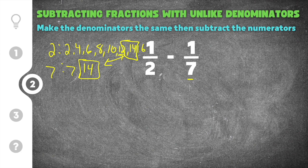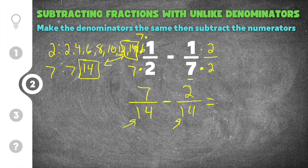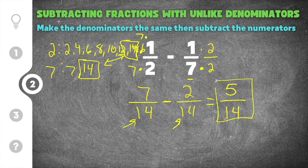We need to change both denominators into 14. For 1 half, I multiply by 7 over 7 because 2 times 7 is 14: numerator 1 times 7 is 7, denominator 2 times 7 is 14. For 1 seventh, I multiply by 2 over 2 because 7 times 2 is 14: numerator 1 times 2 is 2, denominator 7 times 2 is 14. Now that they have the same denominator of 14, we subtract: 7 minus 2 is 5, keeping the denominator 14. Nothing goes into 5 and 14 evenly, so our final solution is 5 fourteenths.